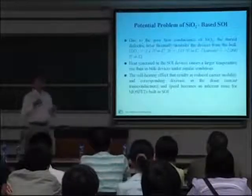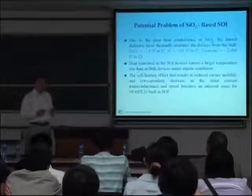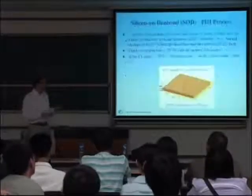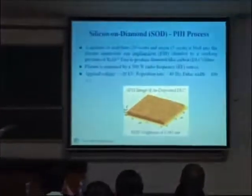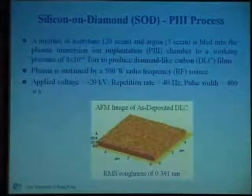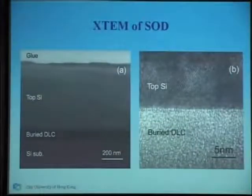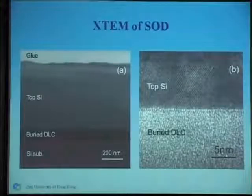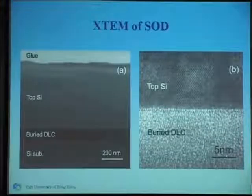Can we use diamond to substitute for SiO2? That's our goal. Diamond is a single crystal material with sp3 tetrahedral coordination — it's not easy to make. First, we need to make the surface very flat. We have made what we call a diamond-like coating, DLC — a very flat surface with a roughness of about 0.38 nanometers. And with that, we are able to make an SOD structure — silicon on diamond. This is silicon, and instead of having SiO2, we have diamond-like coating here, and silicon substrate. So far so good.